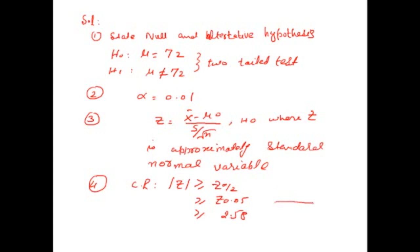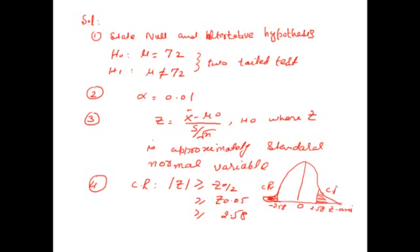The critical region falls on both sides of the z-axis. On the positive side, a positive value of z forms the critical region, and on the negative side, a negative value forms the critical region. So critical region: z absolute value greater than 2.58 on both tails.